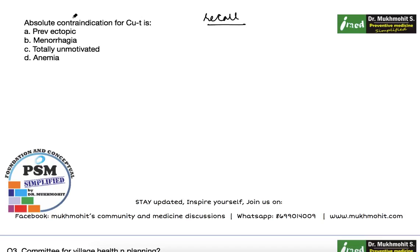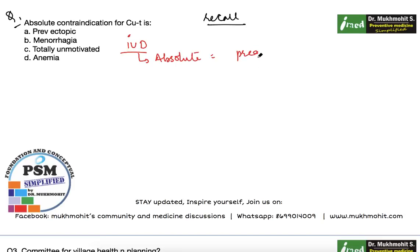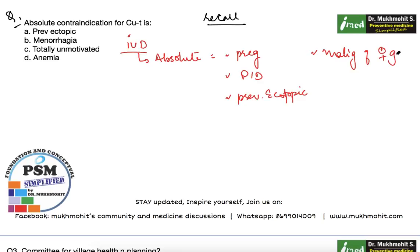The first recall MCQ: the absolute contraindication for Copper T is previous ectopic pregnancy, menorrhagia, totally unmotivated female, or anemia. This is a straightforward MCQ. Please remember that for intrauterine devices or Copper T, the absolute contraindications are: pregnancy, pelvic inflammatory disease, and previous ectopic pregnancy.